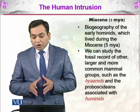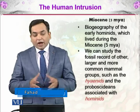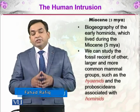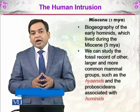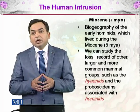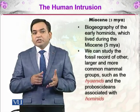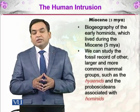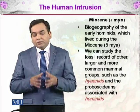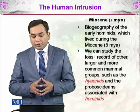We can study the fossil record of other, larger, and more common mammal groups such as hyenids — which are hyenas — and proboscidians, associated with the hominids. Proboscidians are animals having a proboscis (called 'sond' in Urdu), and these were animals just like the elephant as well as the great mammoth. All of these lived in the same niches and areas as the hominids.